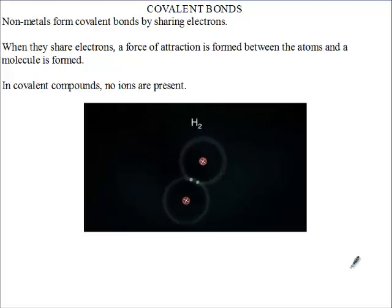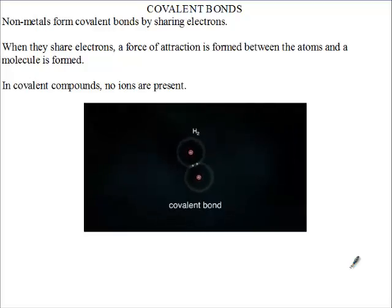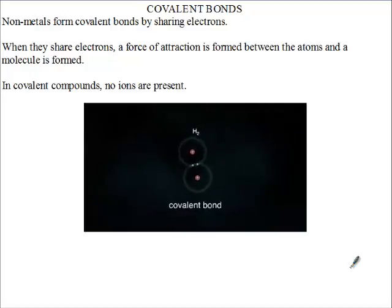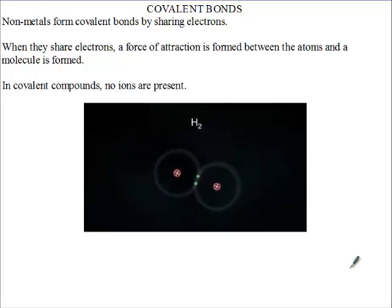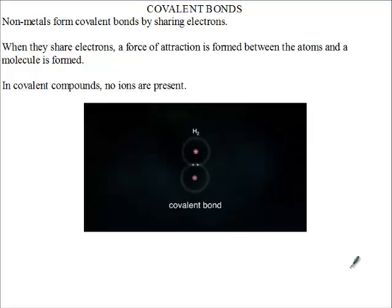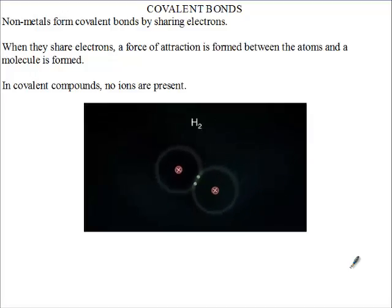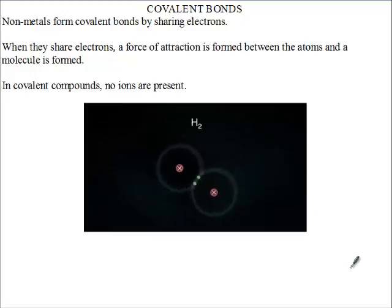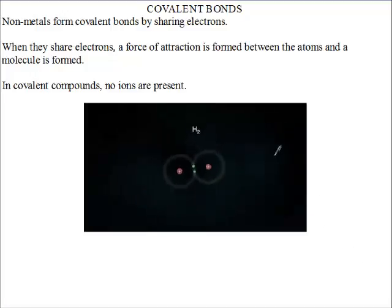The next type of bond we're going to talk about is the covalent bond. Now we got to see in the last video that ionic bonds are formed between cations and anions. Now metals lose electrons to become cations, nonmetals accept the electrons to become anions.